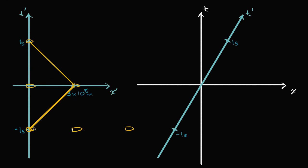This is what would happen from Sally's frame of reference: a second before she reaches me, at t prime equals negative one second, she emits a photon. At t prime equals zero seconds it gets to the spaceship that's three times ten to the eighth meters — essentially one light second — in front of her. Then a second later, she gets the reflection. That's what this diagram is describing.